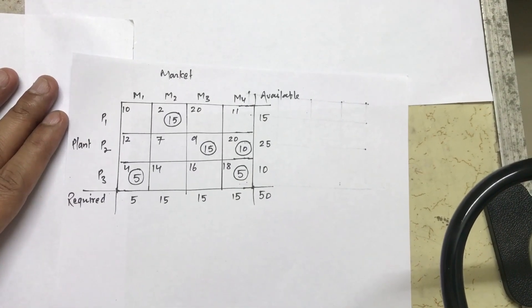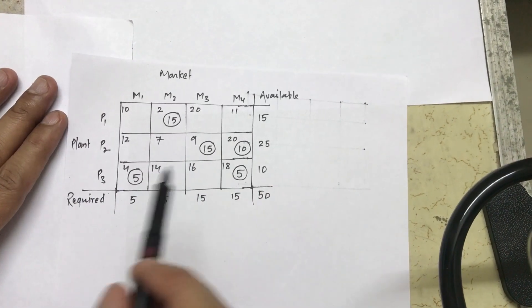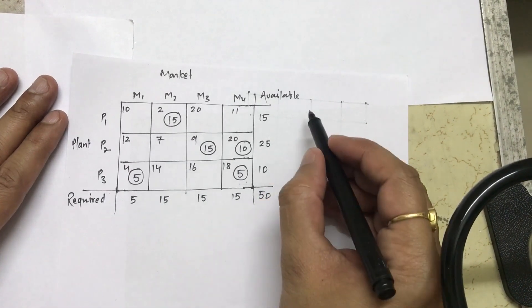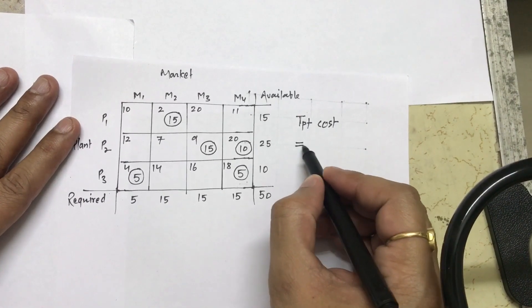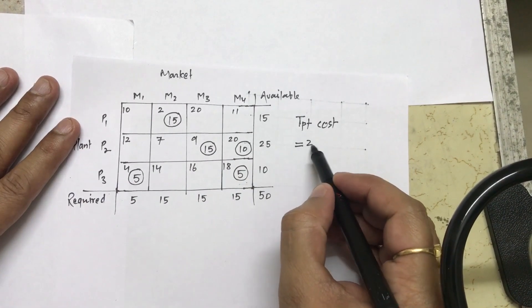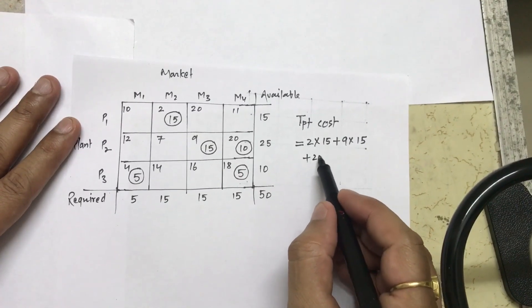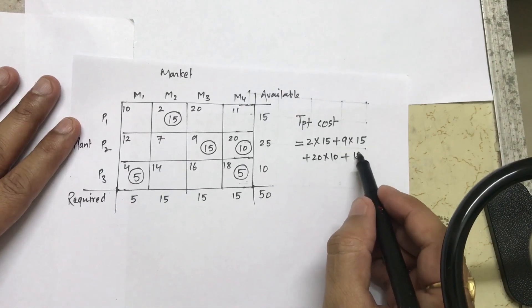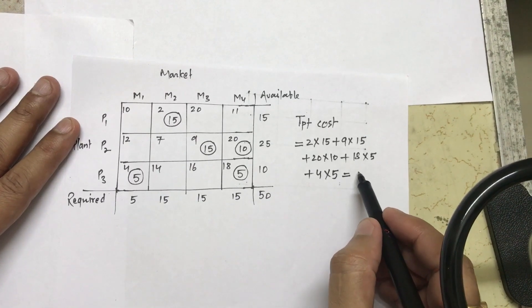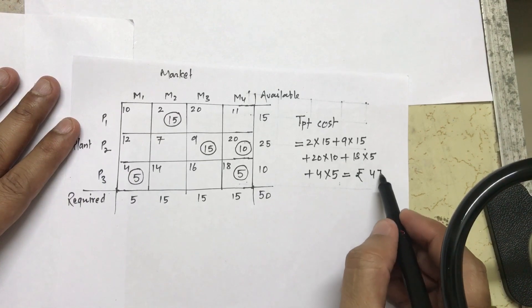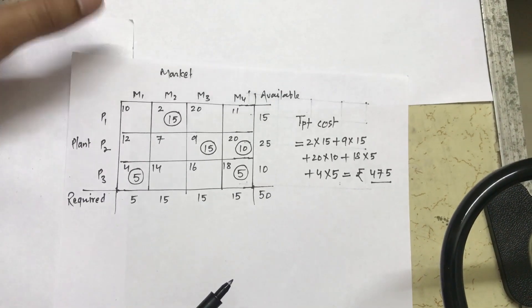Good evening everyone. This is the second part of the video. In the first part I already discussed how to calculate the initial solution using Vogel's approximation. This is the table which I got, and if I calculate the transportation cost — it is 2 times 15 plus 9 times 15 plus 20 times 10 plus 18 times 5 plus 4 times 5 — which comes out to rupees 475.